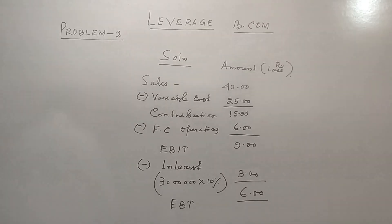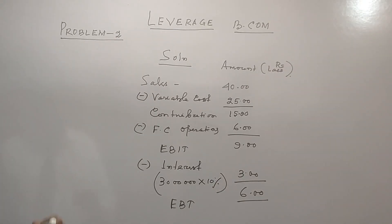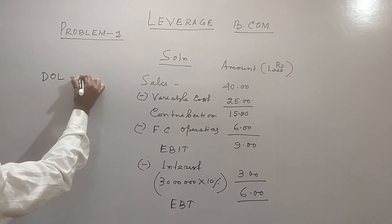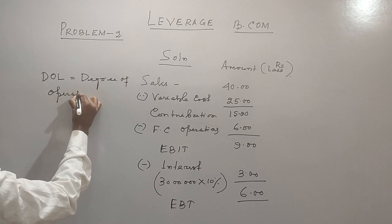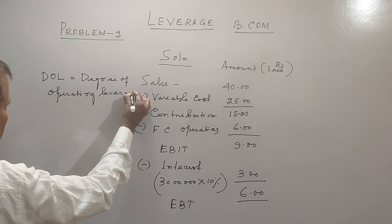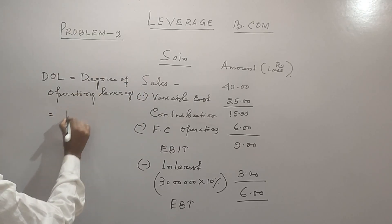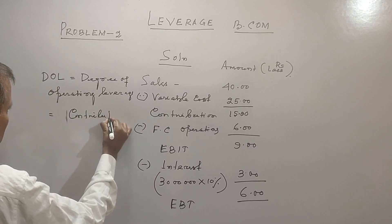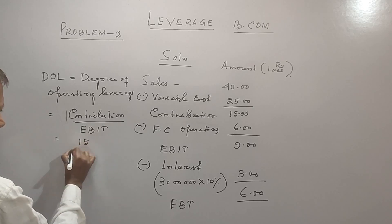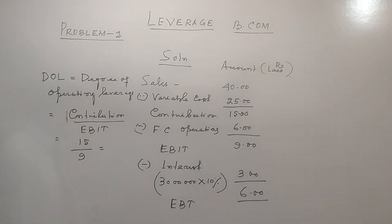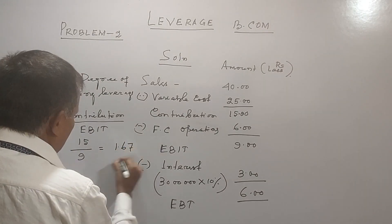Now we have to find out how much is your operating leverage and financial leverage. Let us start with the operating leverage — DOL, degree of operating leverage. The formula is contribution divided by EBIT. Contribution here is 15 lakhs, EBIT is 9 lakhs. So 15 by 9 comes to 1.67 times.